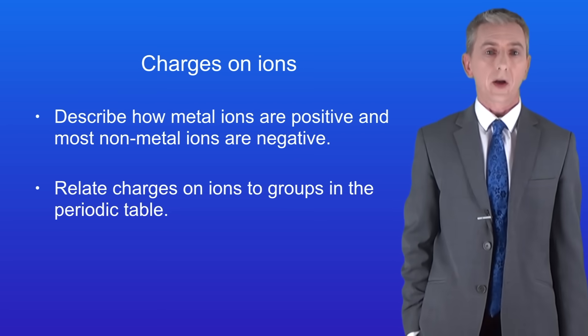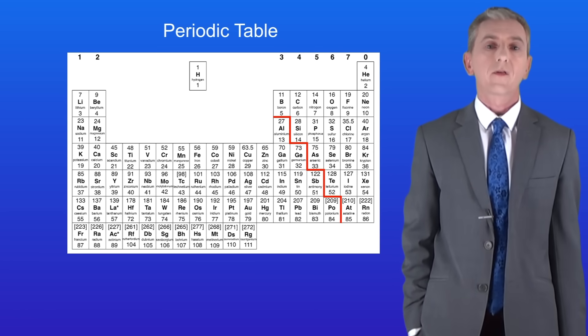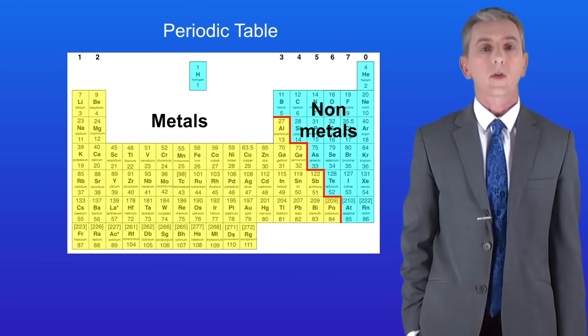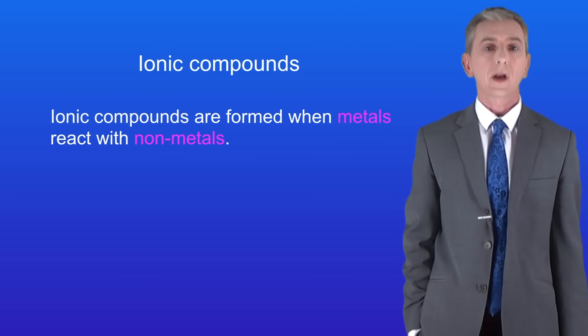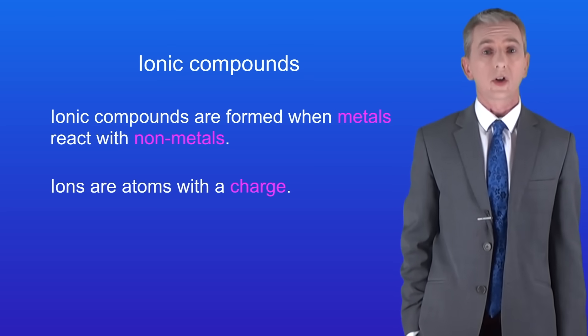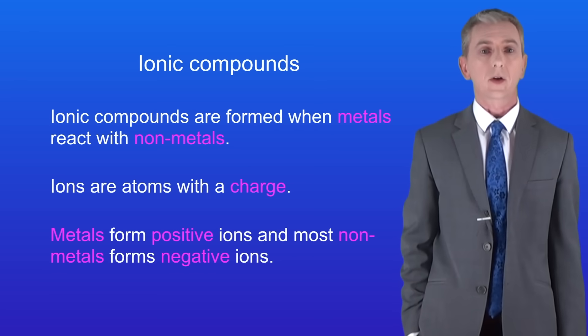Let's start with a quick recap of ionic compounds. Here's a periodic table and remember that we find metals on the left and non-metals on the right. We've seen that ionic compounds are formed when metals react with non-metals. Ions are atoms with a charge and remember that metals form positive ions and most non-metals form negative ions.